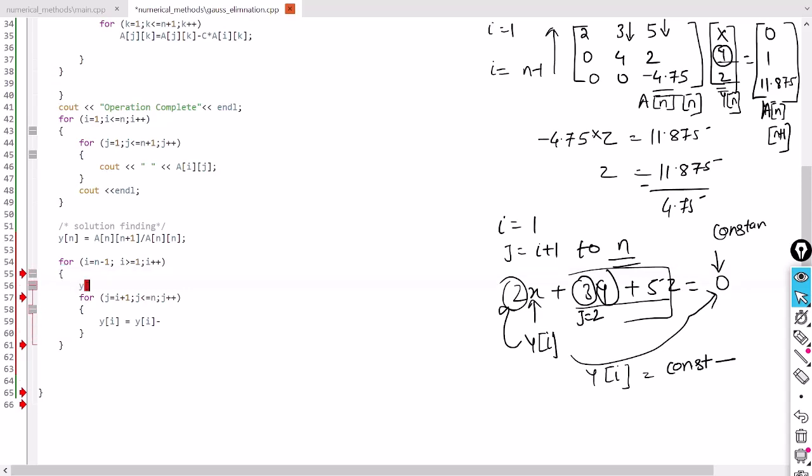So y_i is equal to the constant. The column number is fixed, so a_i, this is the row number, and column number is always n+1. From here I'll subtract that part, 2x plus 3y. For that we need the j index, so that will be a_i_j and this will be y_j.